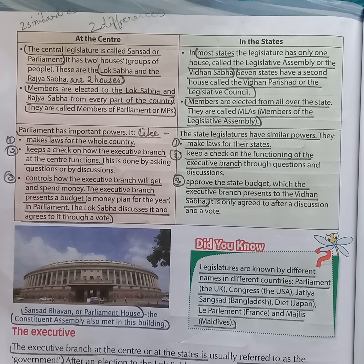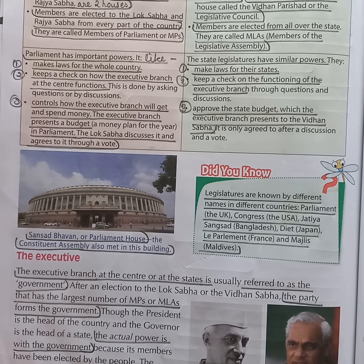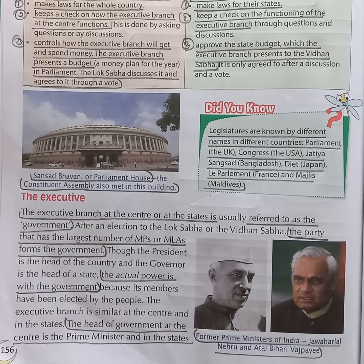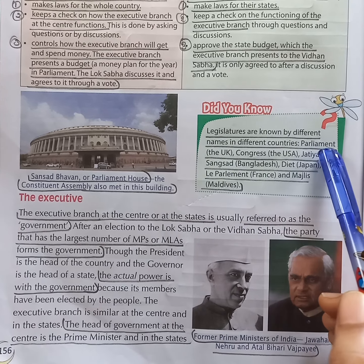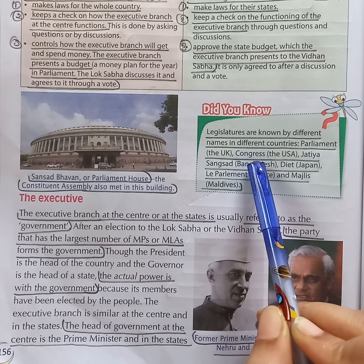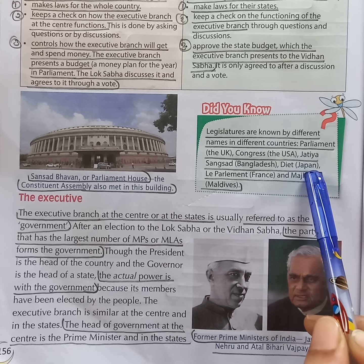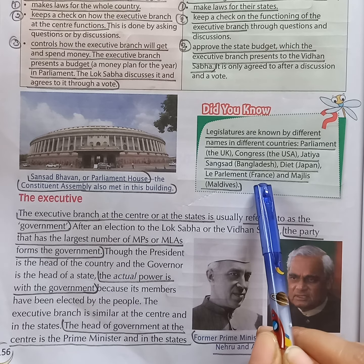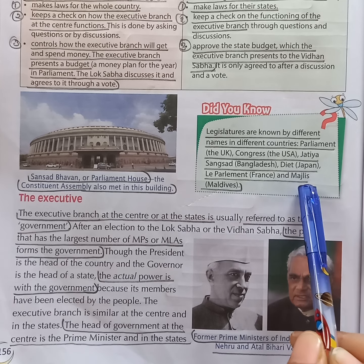Legislatures of different countries are known by different names. The legislature of the UK is known as Parliament. The legislature of the USA is called the Congress. The legislature of Bangladesh is called Jatio Shongshod. The legislature of Japan is known as Diet. The legislature of France is known as Lay Parliament. The legislature of Maldives is known as Majlis.